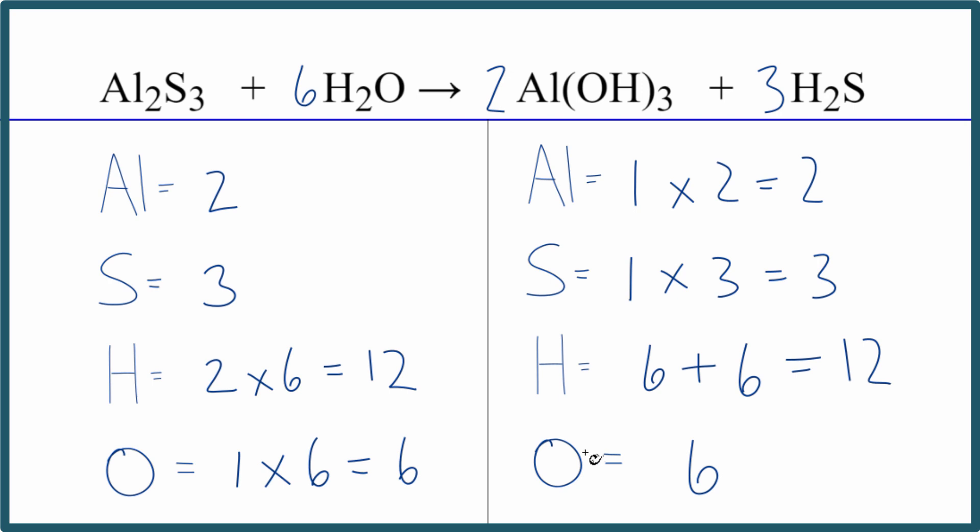So we're actually done. This equation is balanced. The key to this one, be careful when you're adding up your hydrogens and oxygens on this side. Make sure that this number here, the subscript, you multiply it by everything in the parentheses, and then make sure you count all of the hydrogens. Don't forget these out here.